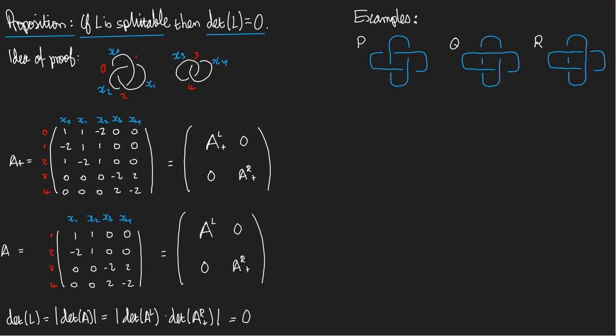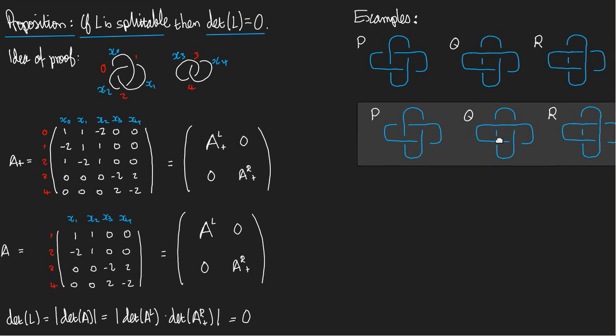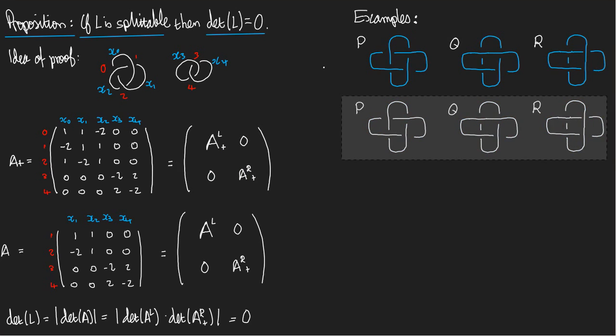Let's do some examples on the right of the page here. Let's see what the proposition tells us about these three links, P, Q, and R. Let's start by working out their determinants. I'm going to start by chessboarding them in the usual way. I choose the same sort of pattern of regions in each case. But what's the difference between the three links? It's that the crossings are slightly different in each case.